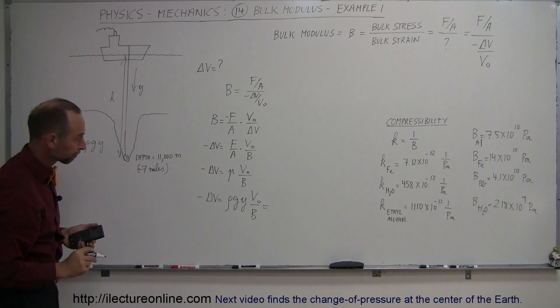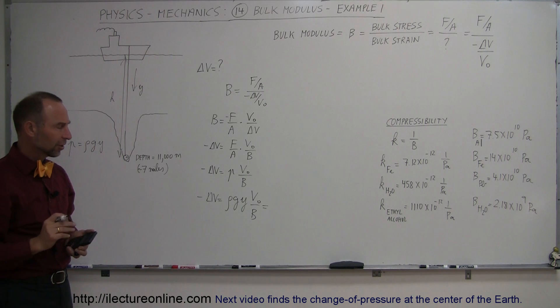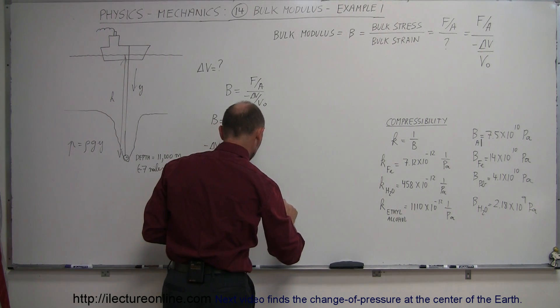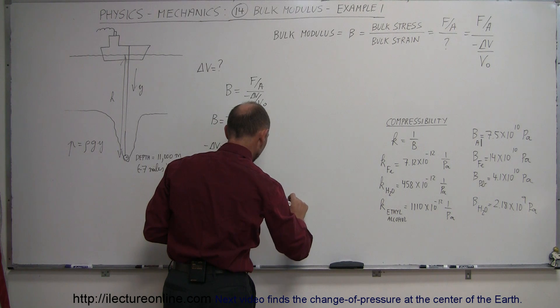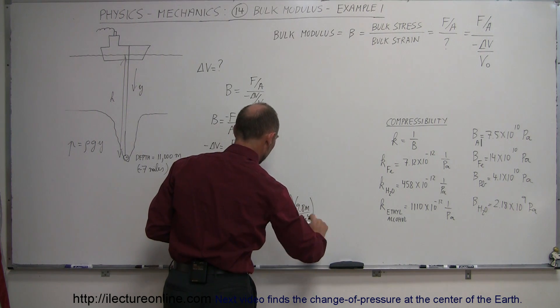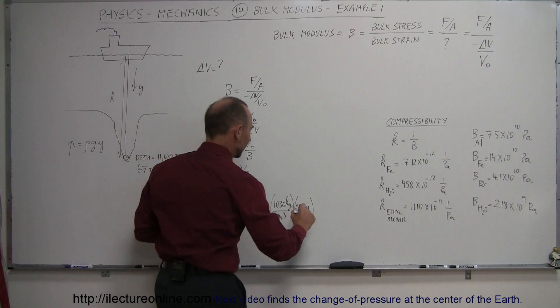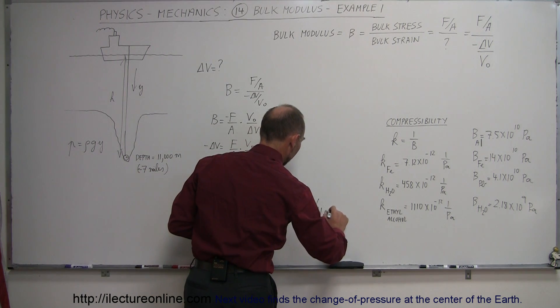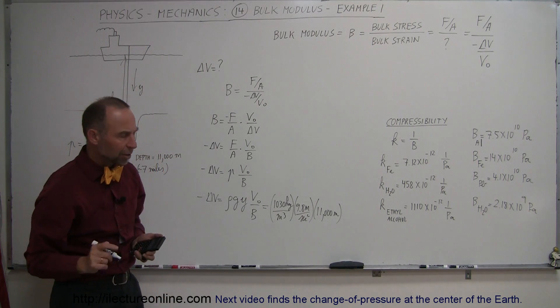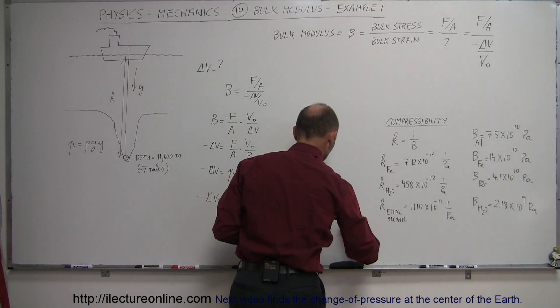So, now let's go ahead and plug in some numbers. The density of ocean water is a little bit more dense than the density of lake water. It's 1,030 kilograms per cubic meter. G, of course, 9.8 meters per second squared. Y, the depth of 11,000 meters.